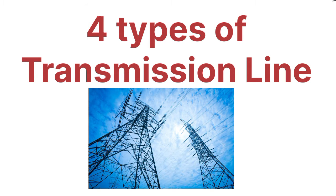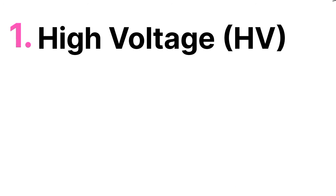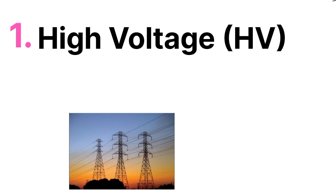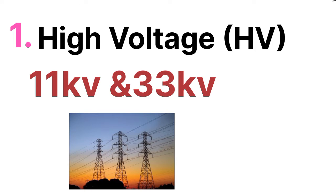The first one is the high voltage transmission line. High voltage transmission lines are generally classified by voltage levels of 11 KV and 33 KV. So if the voltage level is 11 KV or 33 KV, that will be called the high voltage transmission line, that is HV line.